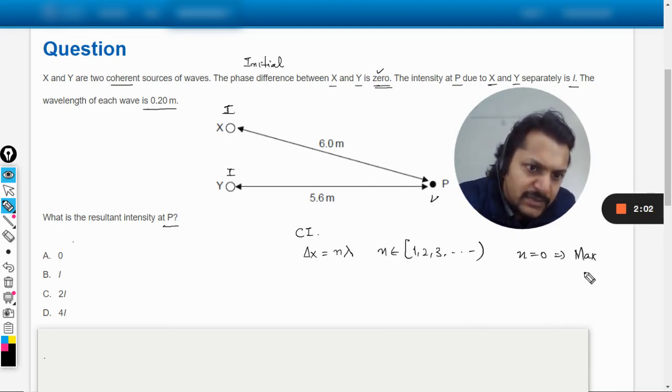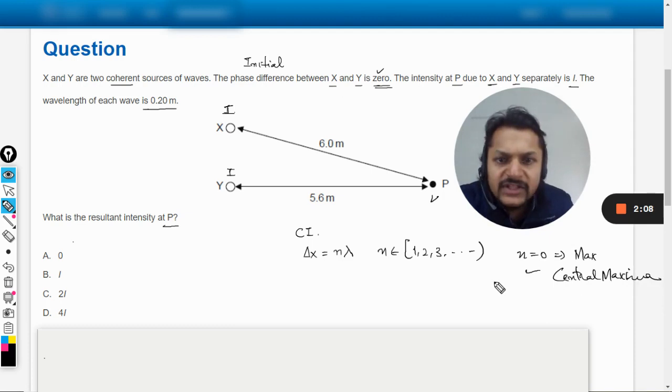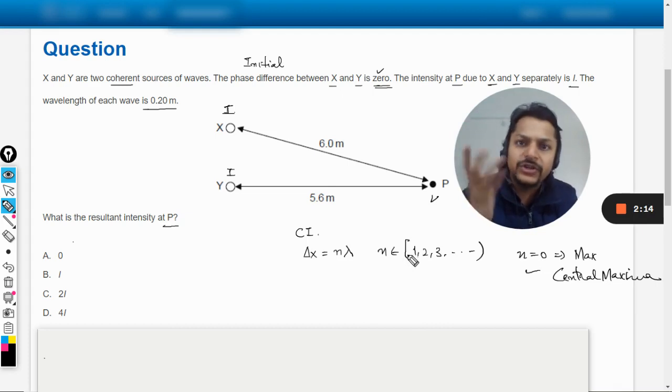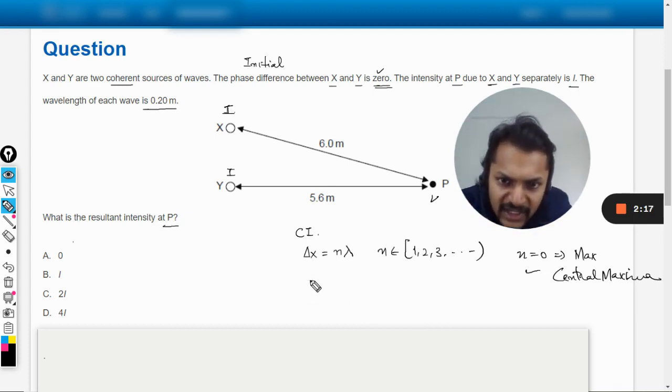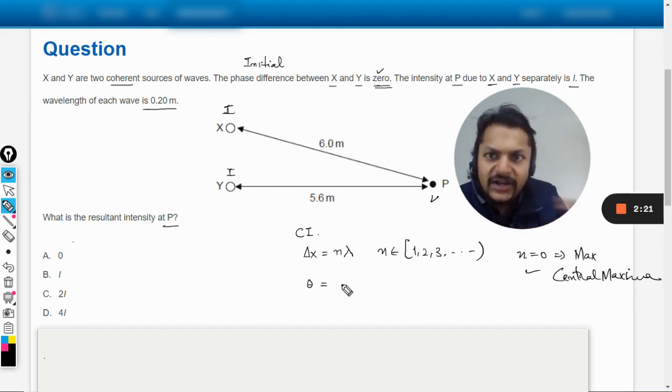Just to clarify, n equal to 0 will be a maxima known as central maxima. That is why I have not enumerated this thing here. I'm not writing 0 here.